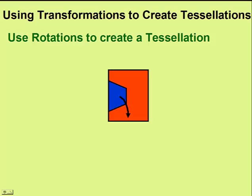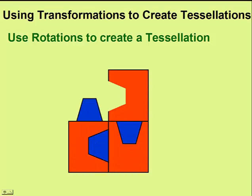We continue this process until we've come up with our tessellation. Finally, we'll use a rotation to create a tessellation. We'll start with our same square object with the little piece cut out. This time, instead of sliding the piece to the right, we will rotate the piece 90 degrees clockwise, creating this shape.